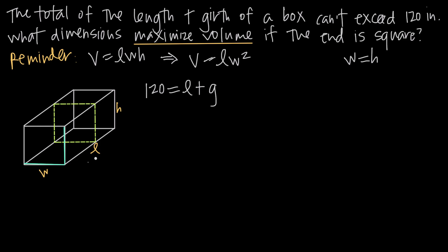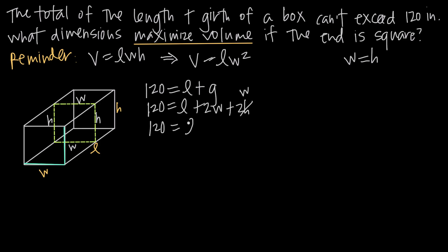Setting up the equation: 120 = length + girth. The girth is the distance around the box — across the bottom (width), up the side (height), across the top (width again), and back down (height again) — so girth = 2w + 2h. Therefore 120 = L + 2w + 2h. Since width equals height, we substitute to get 120 = L + 4w. Solving for L by subtracting 4w from both sides gives L = 120 − 4w.